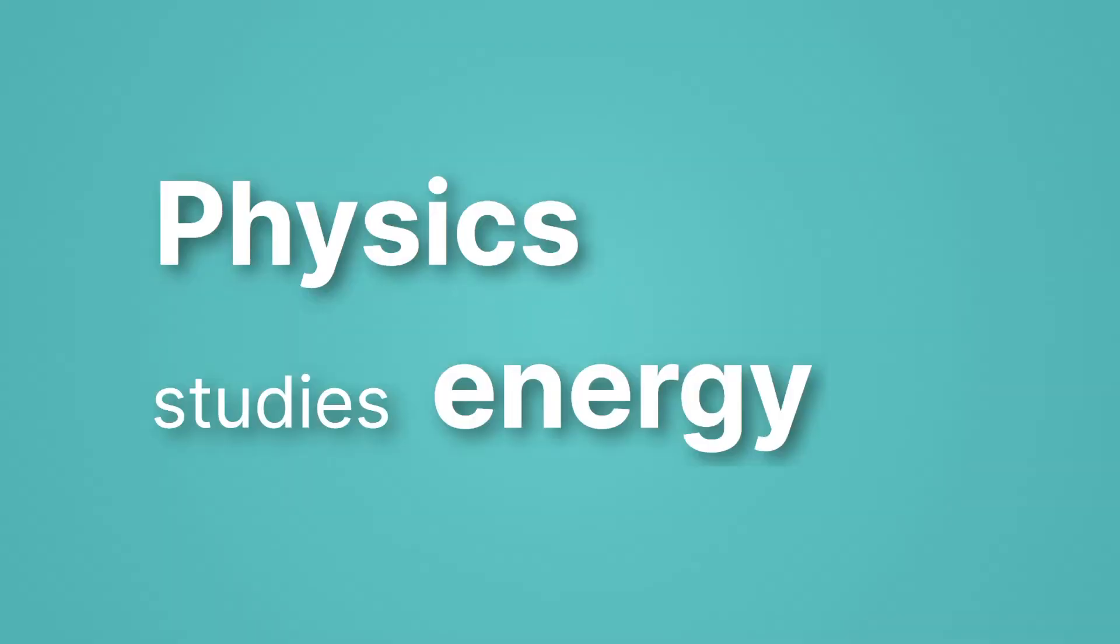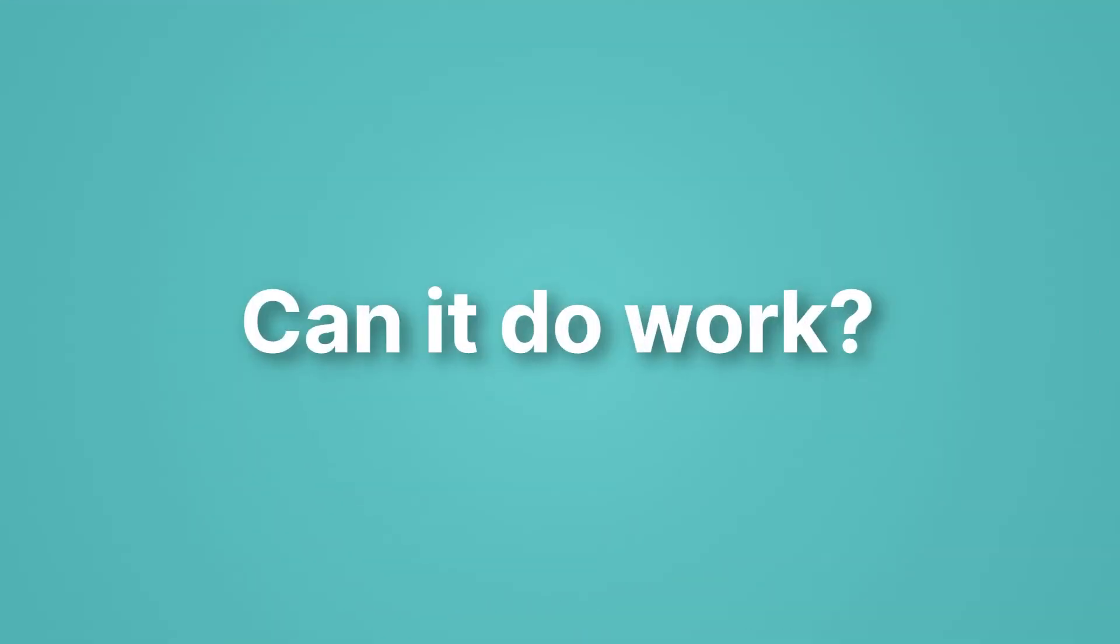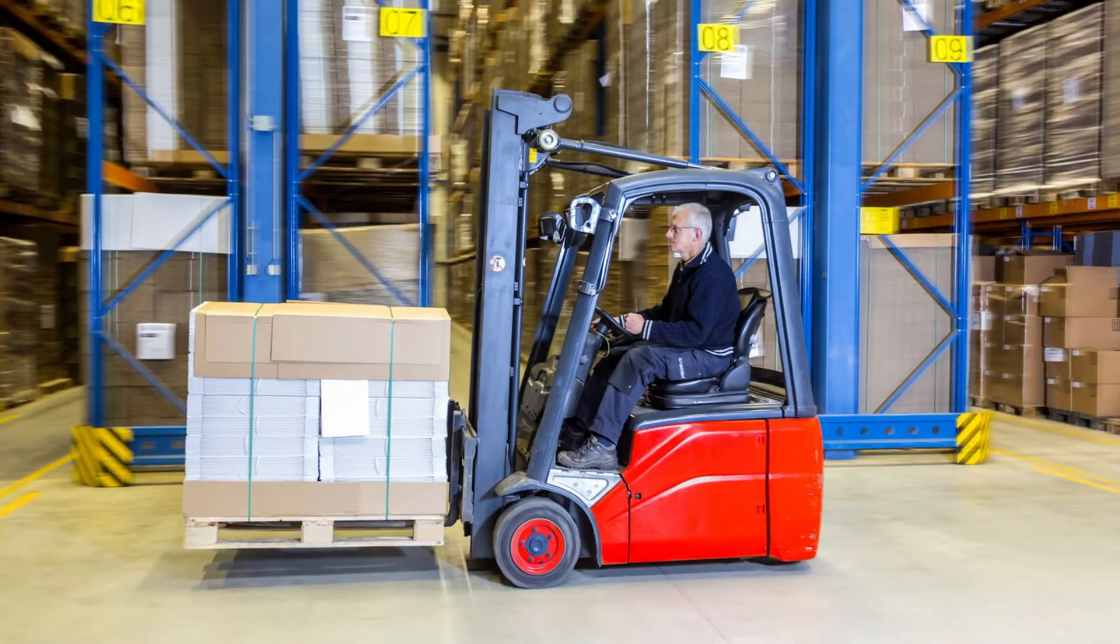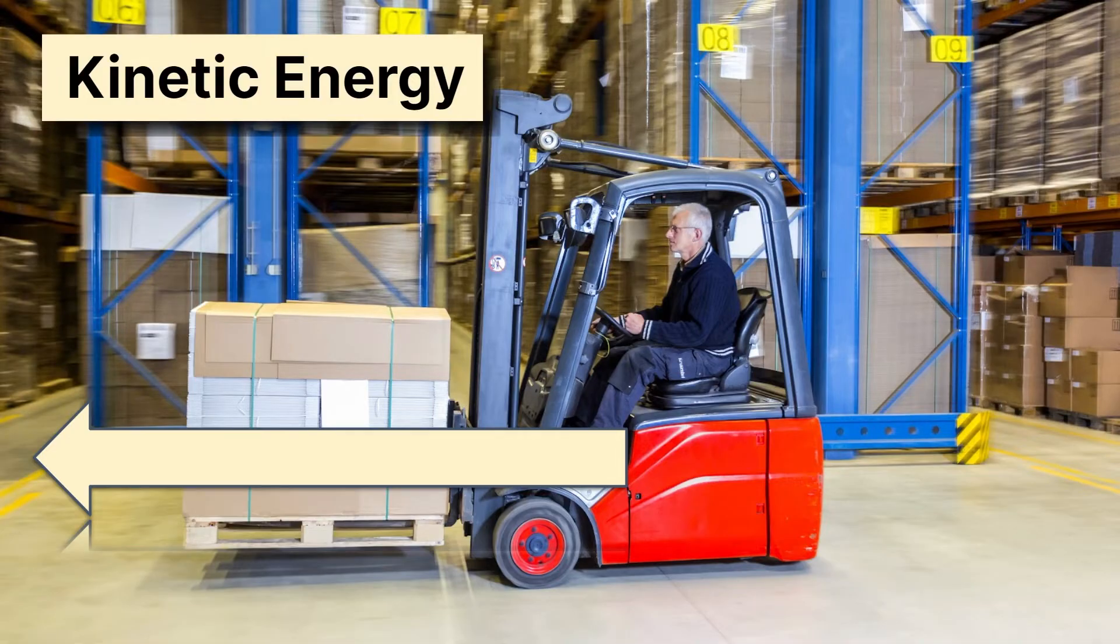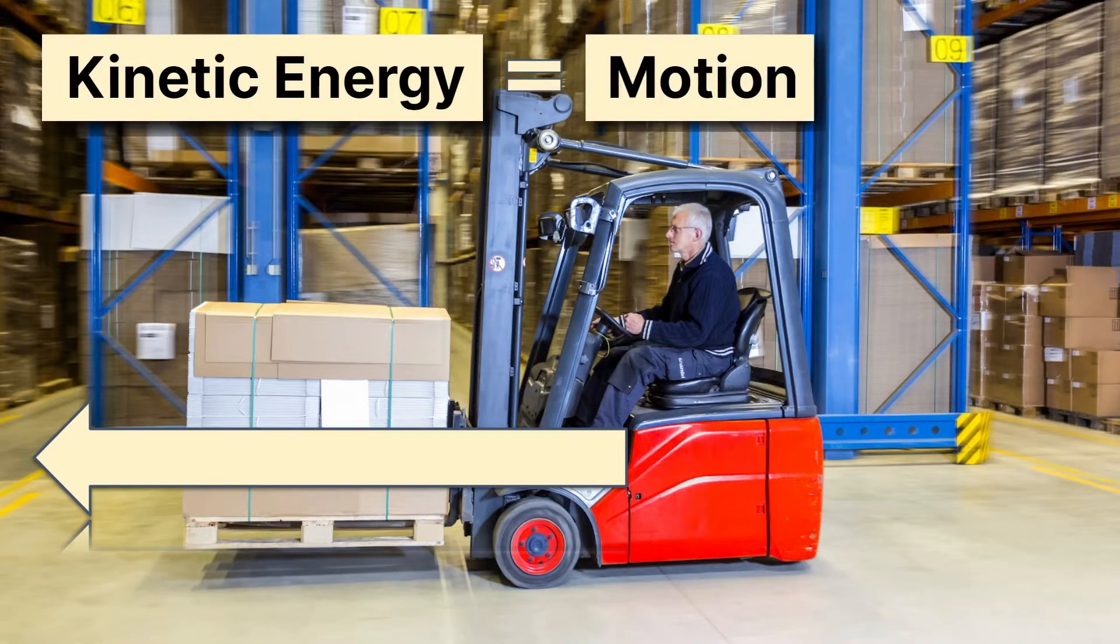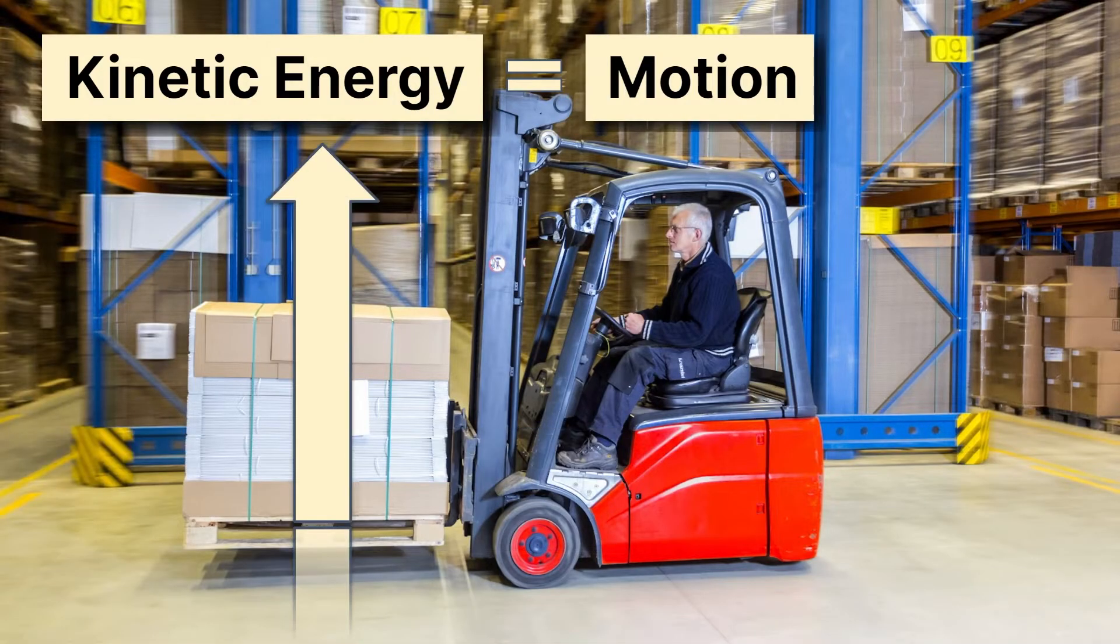Physics also studies energy. And how do we know if something's energy? We ask the question, can it do work? If the answer is yes, then that's energy. So for example, here we see a forklift and it's moving. Anytime we have something moving, we have the ability to do work. And we call this category of energy kinetic energy. It has to do with motion. So it could be motion in the forward direction where we're carrying that box with our forklift, or even in the upward direction, where we lift that box up. So kinetic energy is all about motion.